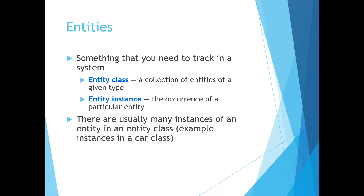Remember that an entity is something that you need to track in the system. If you can identify a collection of entities of a given type — such as a plane, a car, student, employee, or customer order — then this could be called an entity class. It's a higher level of an entity. The occurrence of a particular entity of the entity class, such as Boeing 747 from the main class plane, is called an entity instance.